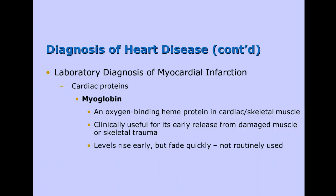Another marker is myoglobin, a cardiac protein which binds oxygen in the cardiac and skeletal muscle. It's clinically useful for its early release from damaged muscle cells, rising very early and falling very fast, but it's not routinely used. The reason is specificity: if somebody's in a car accident, myoglobin would be elevated from either a heart attack or from muscle trauma. You can't tell if the person had a heart attack before they hit the tree or if the trauma caused the elevation — so it's sensitive but not specific for a heart attack.